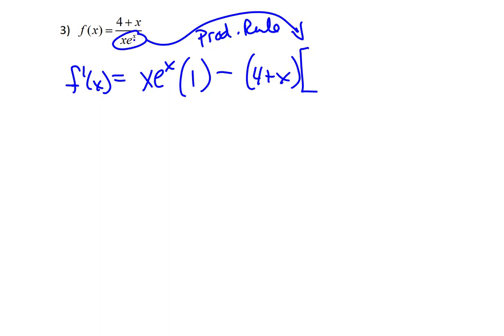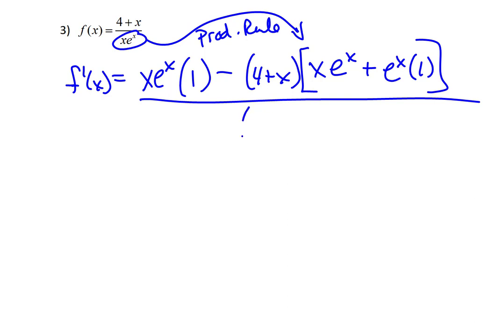Applying the product rule to x e to the x: first times derivative of second gives x times e to the x — since the derivative of e to the x is e to the x — plus second times derivative of first gives e to the x times 1. We're still inside the quotient rule; we just jumped aside to do the product rule as part of it. So we have low d high minus high d low — where d low is what we just computed — all over low squared, which is x e to the x squared.